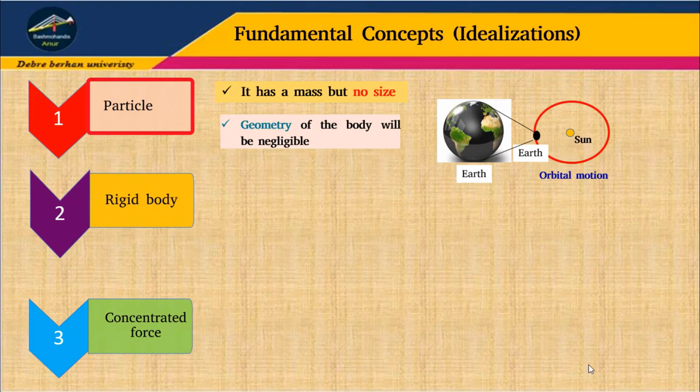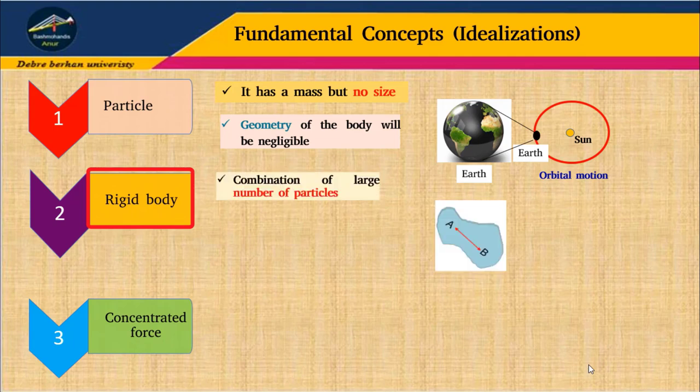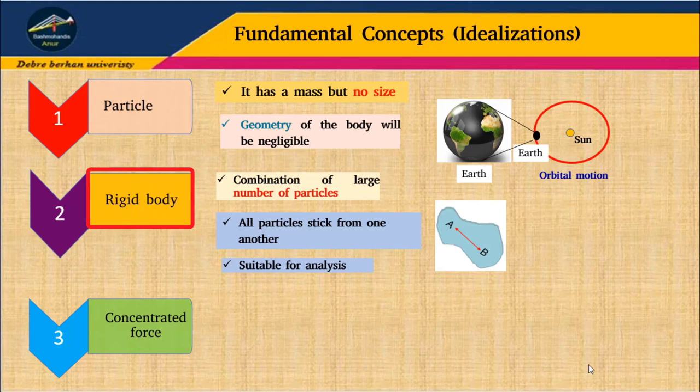The second one is rigid body. Rigid body is a combination of a large number of particles, and all particles stick from one another. What we are saying here is that when force is applied, the object will not deform, or its shape or its size is not going to be changed due to this action force.